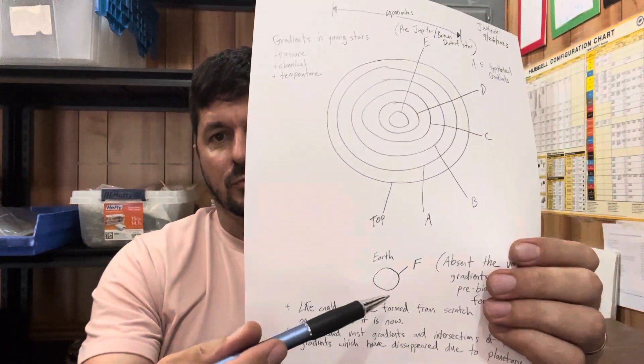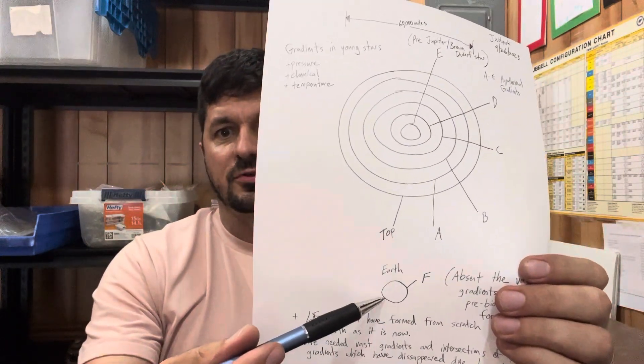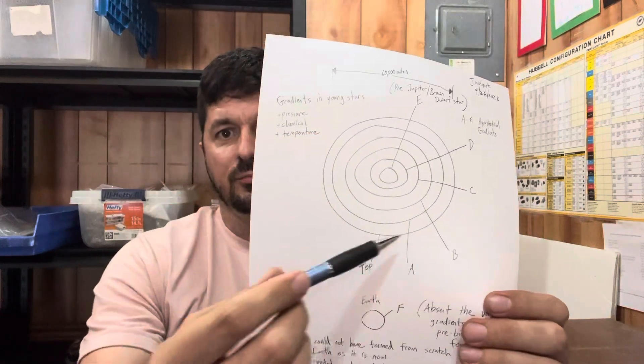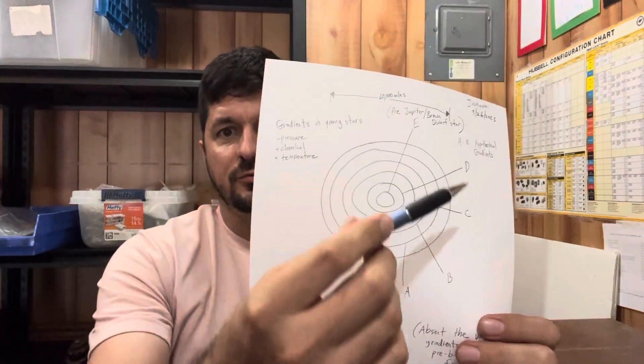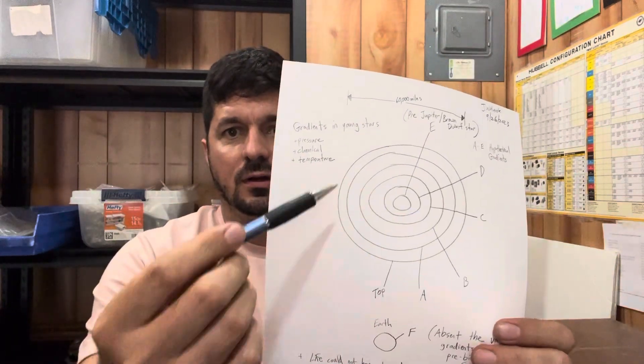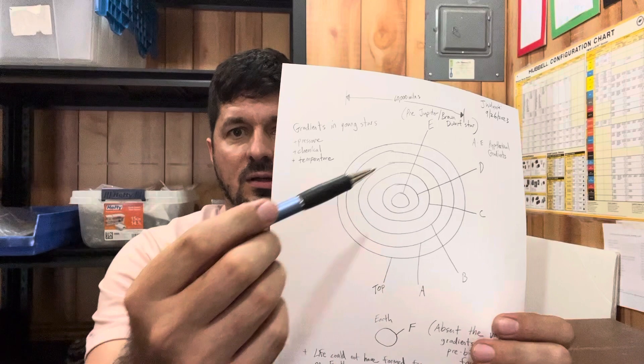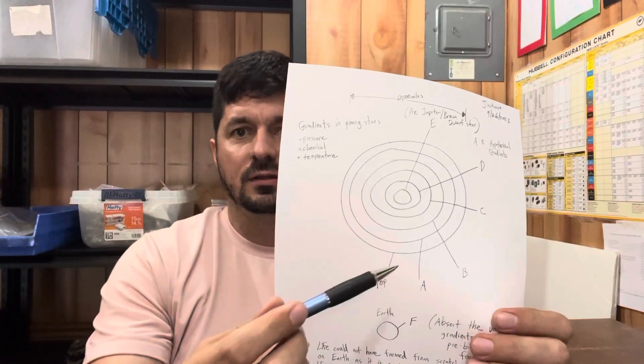There are no gradients to form life on Earth as it is now. You had to have something much more majestic, a lot more complex, a lot more toxic, and a lot more violent than Earth as it is now to create prebiotic molecules.